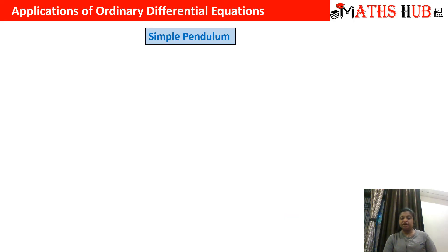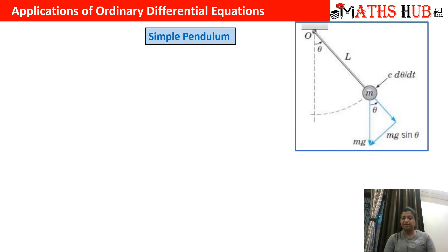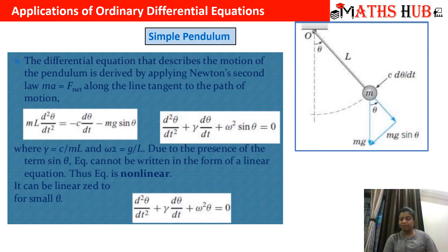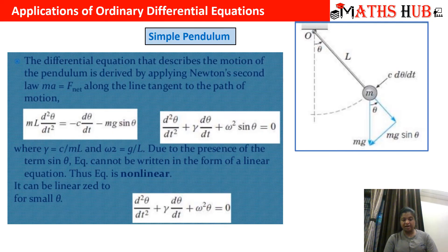The application of a simple pendulum: if you hang a simple pendulum, it will keep on oscillating. Making the equations of motion, we get ml d²θ/dt², where theta is the angle made with the vertical in the direction of maximum displacement. This equals minus c times dθ/dt minus mg sine theta. Dividing both sides by ml, we get d²θ/dt² + γ dθ/dt + ω² sin θ = 0. This is a differential equation in terms of theta with respect to t.